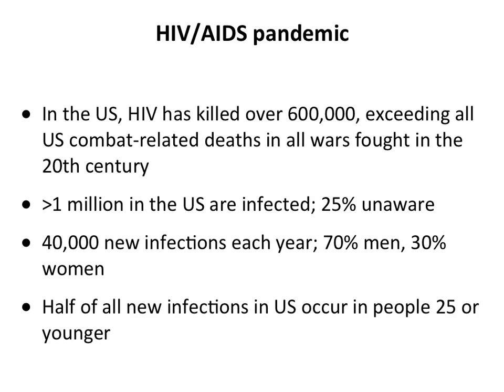This is a major pandemic still ongoing. In the US, HIV has killed over 600,000 people — more than all US combat deaths in the 20th century. Over a million people in the US are currently infected; about a quarter don't know it because they feel nothing and haven't been tested. There are 40,000 new infections per year: 70% in men, 30% in women, and half of new infections occur in people 25 or younger.